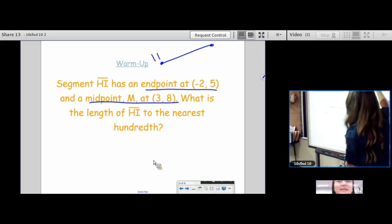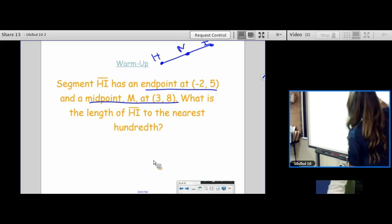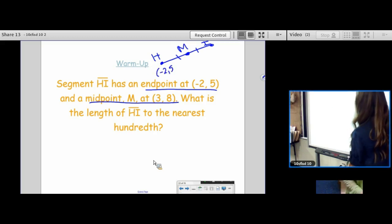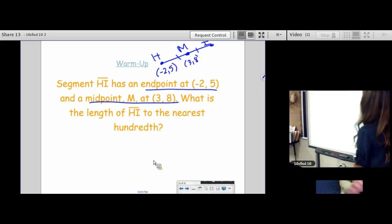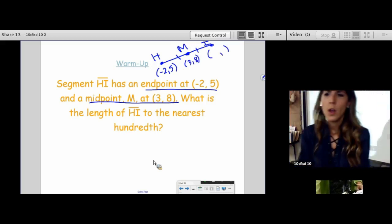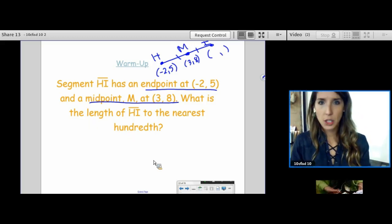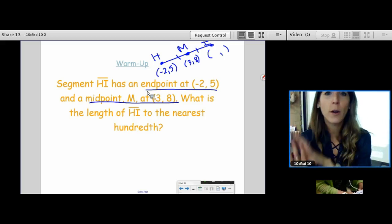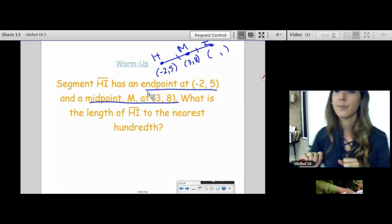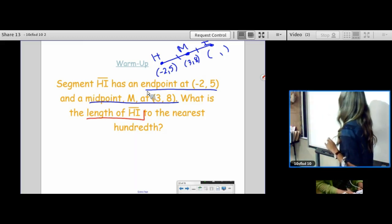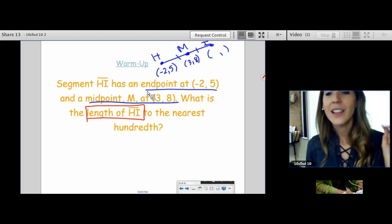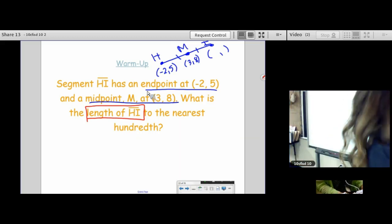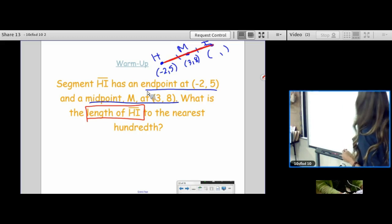So we've got H, we've got I, and then we know the midpoint, M, that's in the middle. One of the endpoints is at (-2, 5). I'm not plotting this, I'm just kind of sketching a picture. Sometimes it helps to take the words and put it into picture form, especially for our visual learners. Now, what are we even trying to find? Are we trying to find the coordinates of I? Are we trying to find the distance from H to M? We want to find the length of HI.